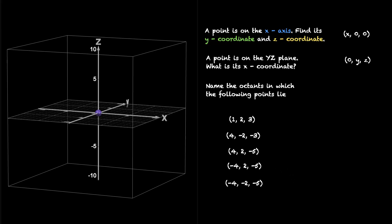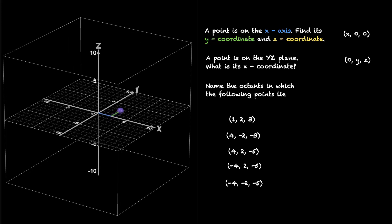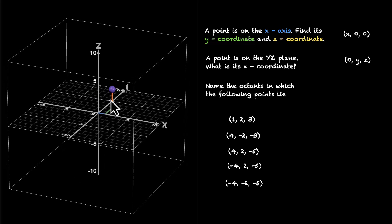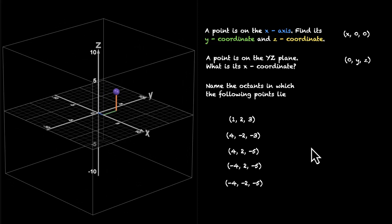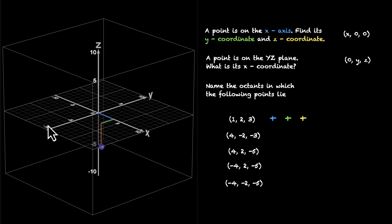Let's do this together. For (1, 2, 3): we're moving one unit along the X axis, then two units along the Y axis, and then three units along the Z axis. All three coordinates are positive — this means it is in the first octant. For the next one, (4, -2, -3): we move four units along the X axis, then -2 along the Y axis — so we move back — and then -3, which means we go to the basement. This is in the eighth octant — any point with signs (positive, negative, negative) will be in the eighth octant.